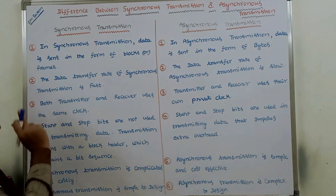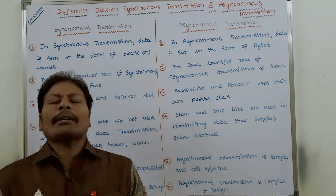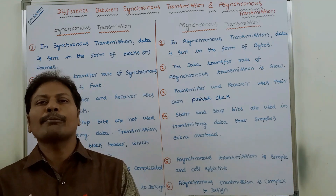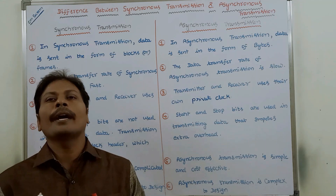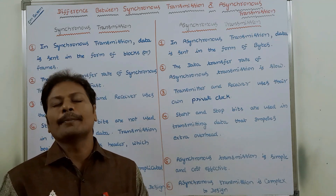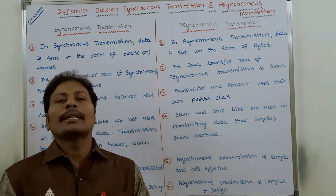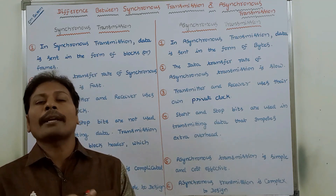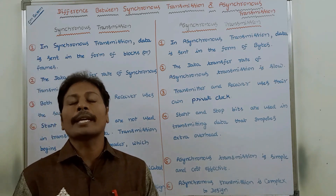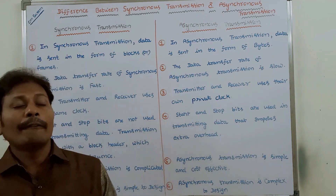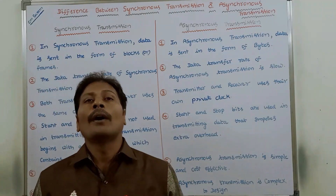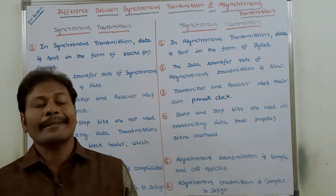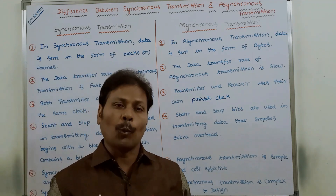Second point: data transfer rate. Data transfer rate is the amount of data that can be transferred in one second. The data transfer rate of synchronous transmission is very fast, whereas in the case of asynchronous transmission, the data transfer rate is slow.